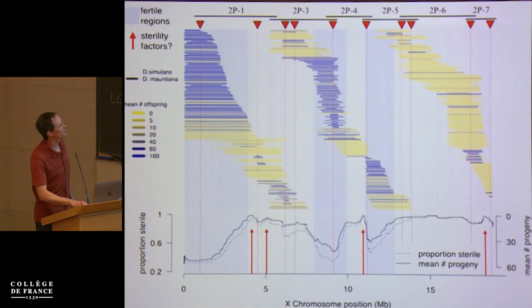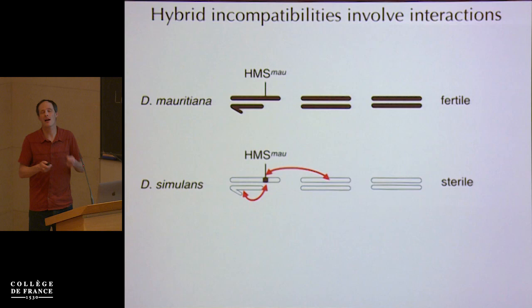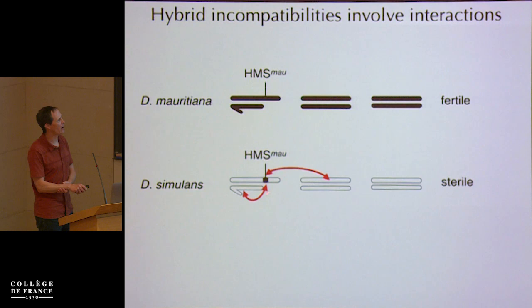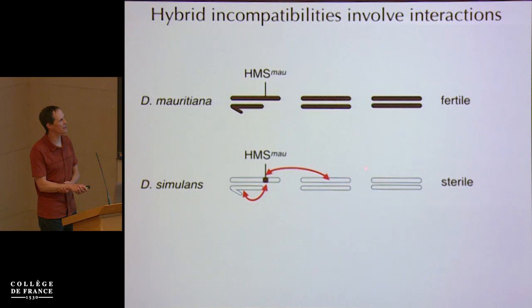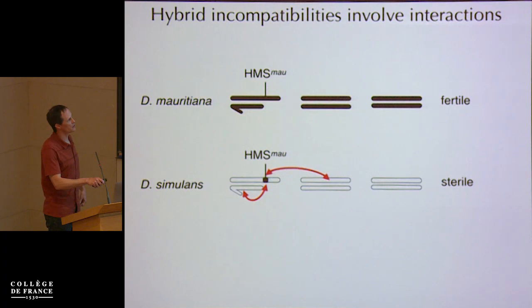I want to talk about trying to understand what the interacting partners are. Remember that the incompatibilities involve interactions between, in our case, *mauritiana* X-linked alleles that must cause sterility due to their interactions with simulans alleles elsewhere in the genome. This *mauritiana* allele is perfectly fine in a *mauritiana* male. So those interactions must be with loci on the autosomes, the Y chromosome, or potentially elsewhere on the X chromosome.